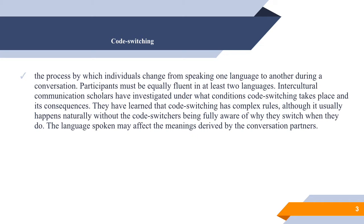Although code switching usually happens naturally without the speakers being fully aware of why they switch when they do, the language spoken may affect the meanings derived by conversation partners. For example, if two people fluent in both English and Spanish are having a conversation in Spanish and a third person joins them who can only speak English, the conversation naturally switches to English — no one states 'okay, now let's talk in English.' Now, if the speakers do not know the third person who joins them, but they know his name is Jesus Martinez, they could continue speaking Spanish until they perceive he does not comprehend what they are saying. This illustrates code switching as a desire to accommodate another participant.